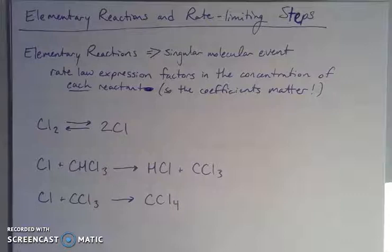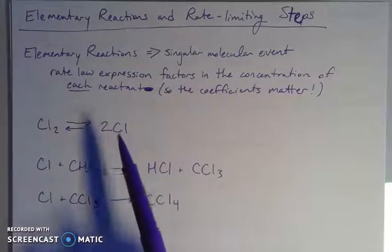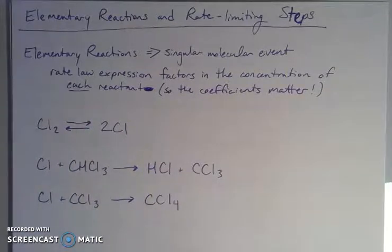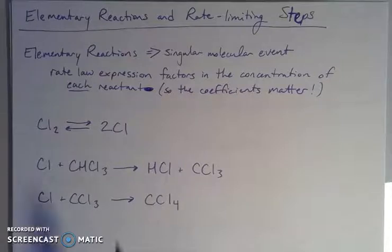So if it specifies that it's an elementary process, then you have different rules when it comes to the rate law expression. Our rate law expression is that the rate is equal to some constant k times the concentrations of your reactants raised to certain powers — but we said those powers have to be experimentally determined with experimental data.